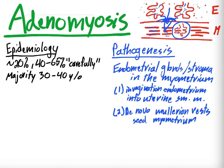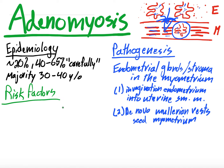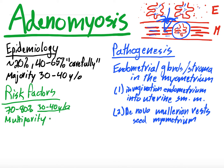So, endometrial glands and stroma in the myometrium — possibly from invagination, possibly from embryology. Now for risk factors. About 70 to 80% of diagnosed patients are 30 to 40 years old, so age is a risk factor. Multiparity — having had multiple pregnancies — also increases risk. And prior surgeries within the endometrium are a risk factor, which makes sense for the invagination theory, since those surgeries interrupt the endometrial-myometrial border.